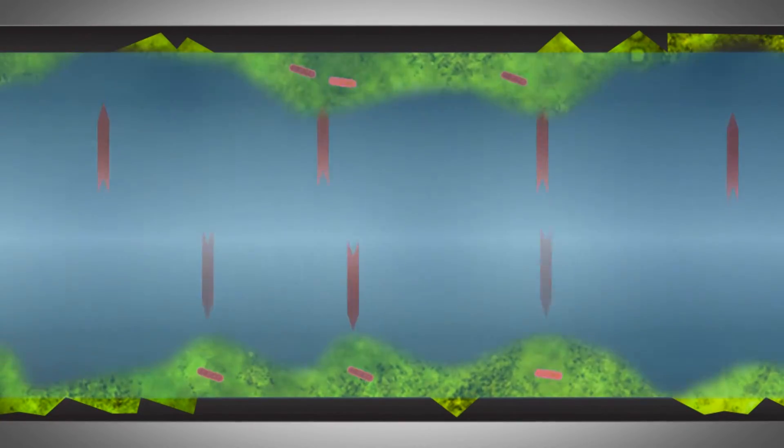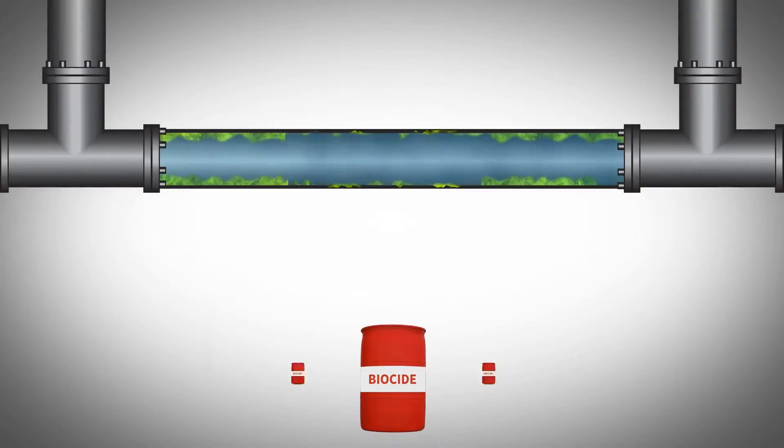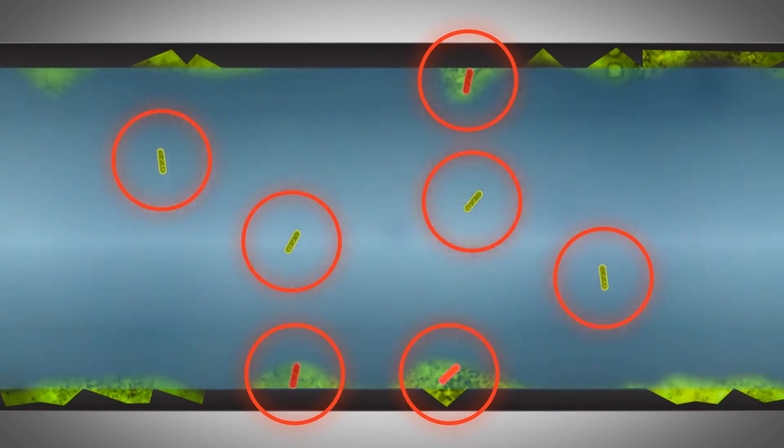Most biocides do not penetrate biofilms effectively, and as a result, biofilm bacteria control can only be achieved at much higher biocide concentrations. If biofilm bacteria are not effectively controlled, problems caused by both biofilm and planktonic bacteria in a system will persist.